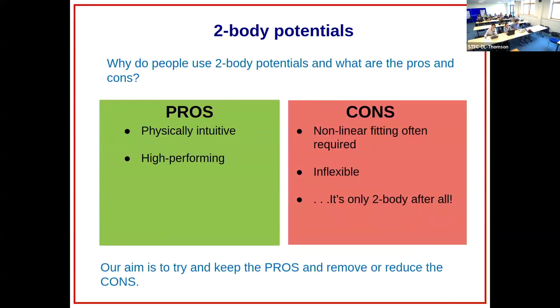In the broader sense, why are people interested in using two-body potentials in the first place? Well, most of these functions are actually rather physically intuitive and often very high performing. Some of the drawbacks - Lennard-Jones is not one of them perhaps, but especially for multi-component systems where you have multiple atoms, the fitting process is highly non-linear. Often the functional form makes them somewhat inflexible at times, and of course they're only two-body.